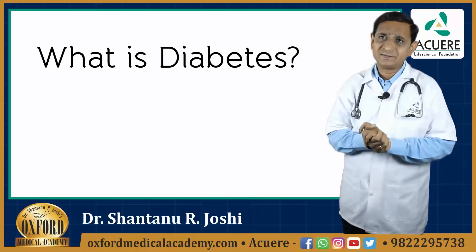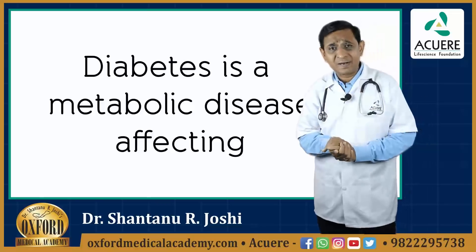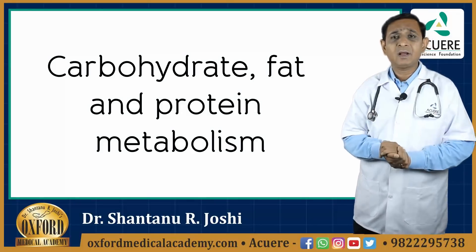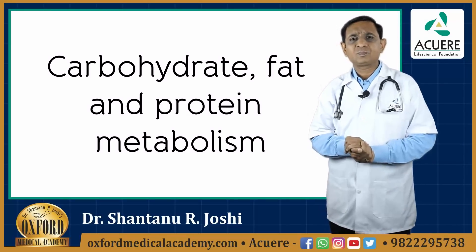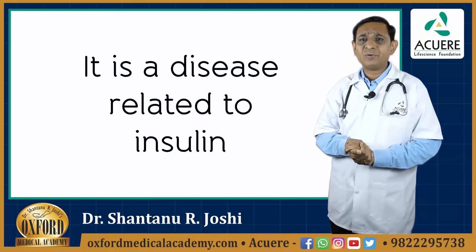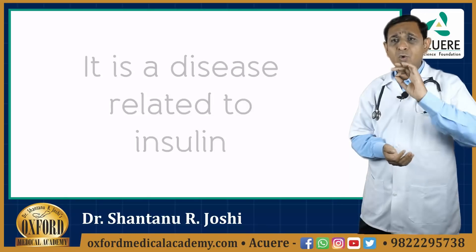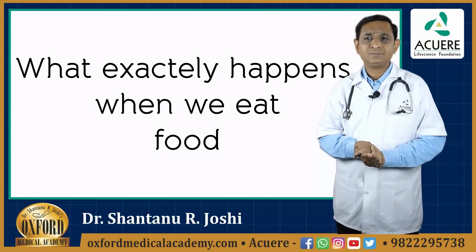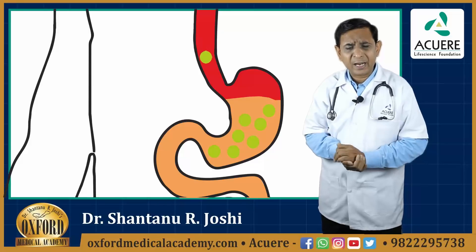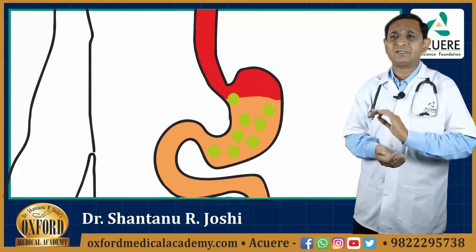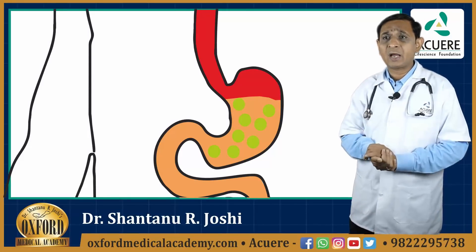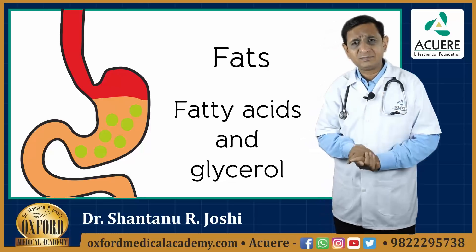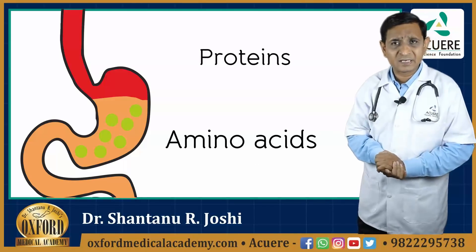What is diabetes? Diabetes is a metabolic disease affecting carbohydrates, fat and protein metabolism. It is a disease related to insulin. To understand it, you should understand what exactly happens when we eat food. When we eat food, any kind of food after digestion, it converts into carbohydrates — means sugar; fat means fatty acids and glycerol; and protein means amino acids.